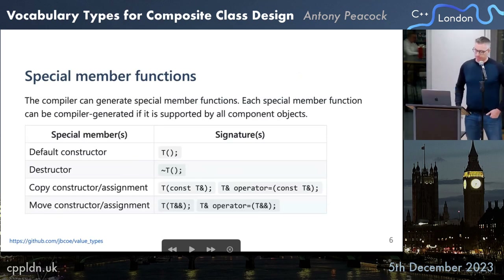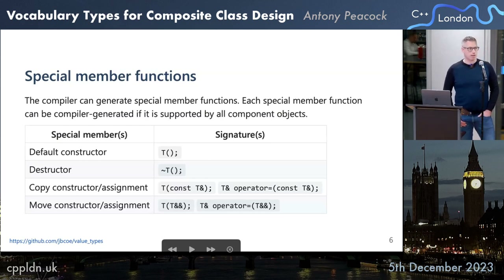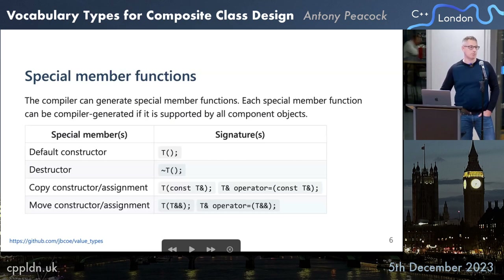The compiler can generate special member functions. Each special member function can be compiler-generated if it's supported by all component objects. Hopefully everyone here is aware of the rule of zero. Whenever we're building classes, we always want to encourage the rule of zero — that is, if our class components all implement compiler-generated special member functions, we get all of our special member functions for free, along with things like strong exception safety guarantees.